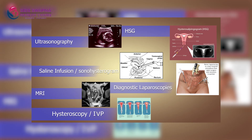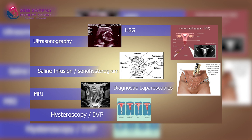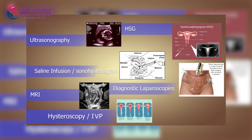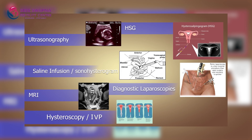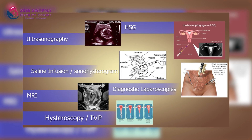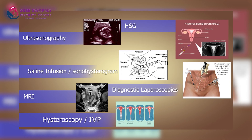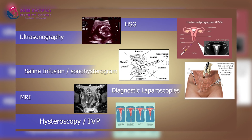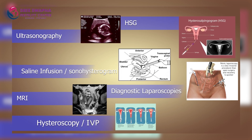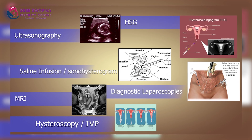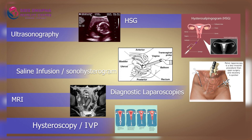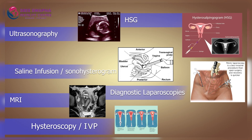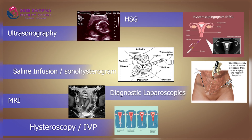Investigations to diagnose these types of Mullerian abnormalities are Hydrasonography, HSG, Saline Infusion Sonohistrography, MRI, Diagnostic Laparoscopy and Hysteroscopy, and IVP. Let us discuss each one of the above in detail — how these investigations can help us diagnose Mullerian duct abnormalities.